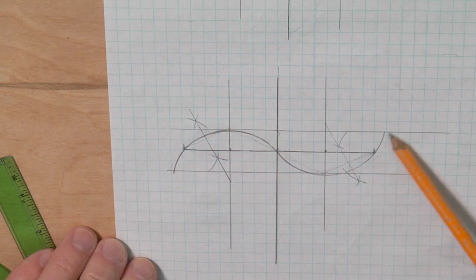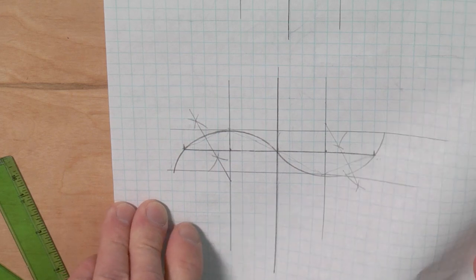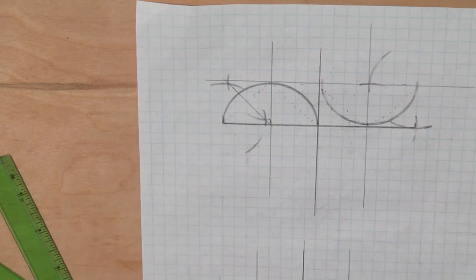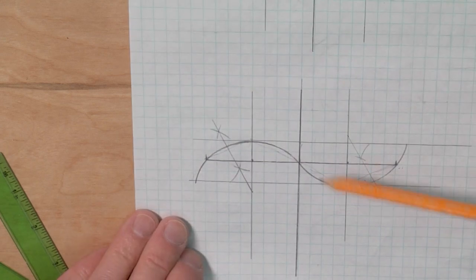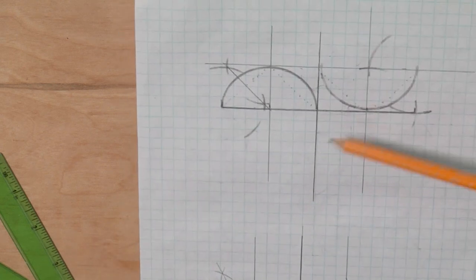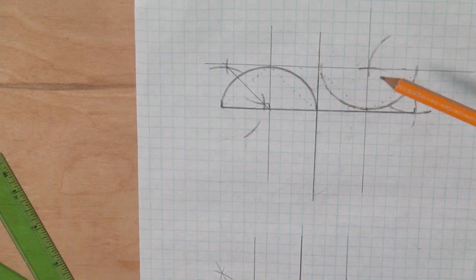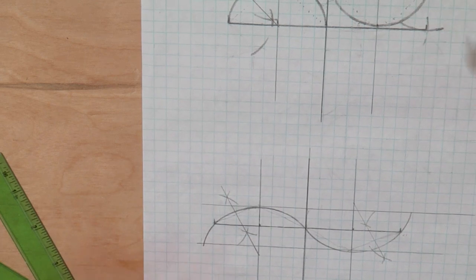There you go. Now you can see we have a nice continuous curve going on it. So I hope that makes sense on the distance there. Remember it's still one inch for both, it's just a half inch above and below our main line, not a full inch above.